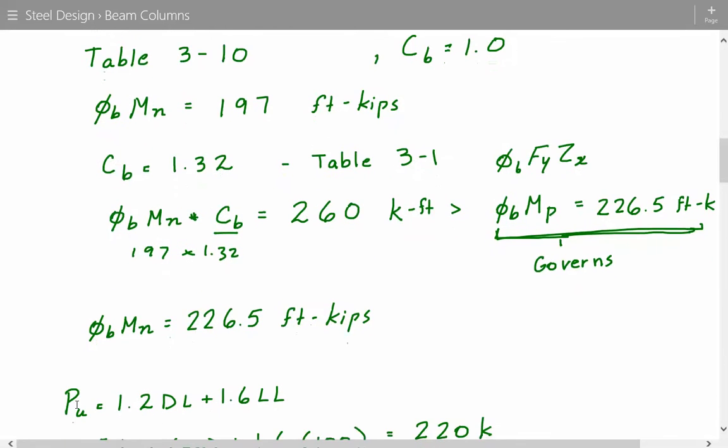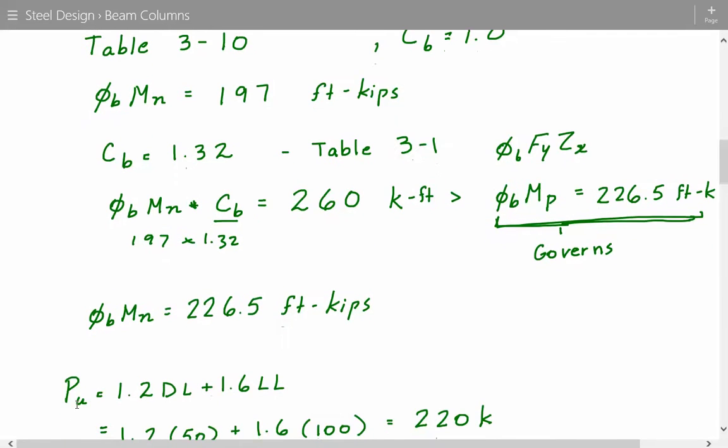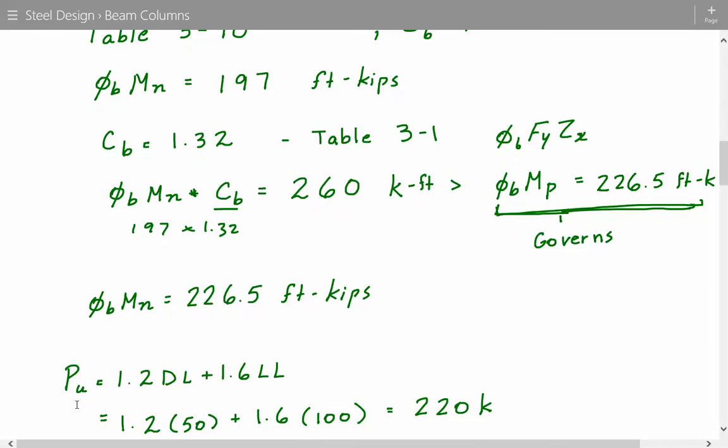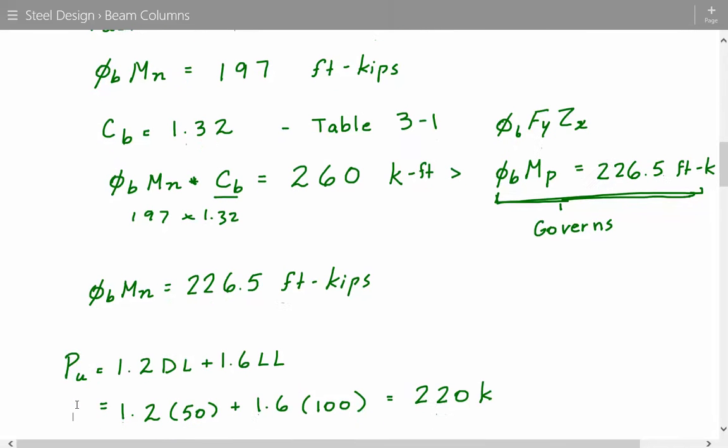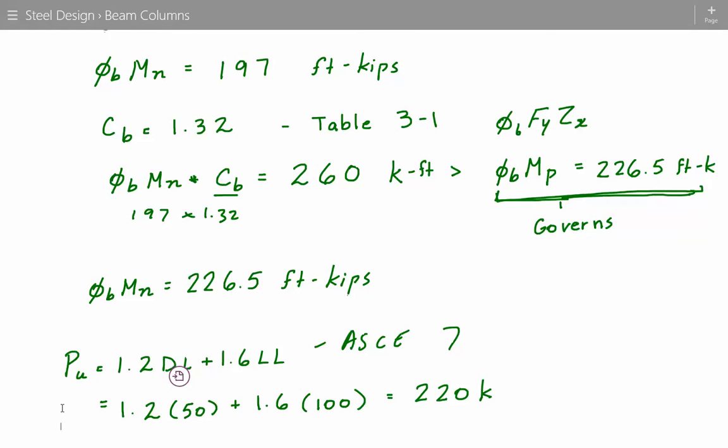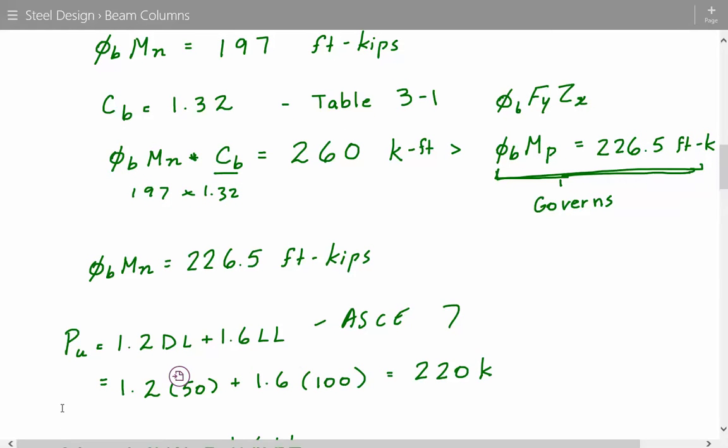Now let's take a look at the applied loads. So we have a dead load and live load axial. To get the factored load based on ASCE 7 load combinations, it's going to be 1.2 times dead load plus 1.6 times live load. So 1.2 times 50 kips plus 1.6 times 100 kips. This gives us 220 kips.